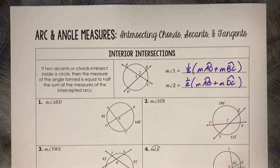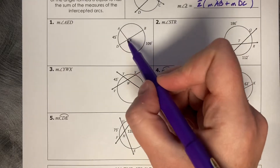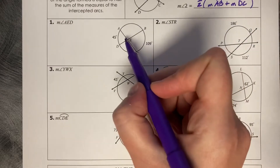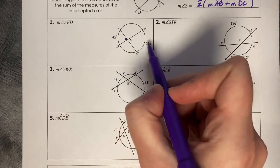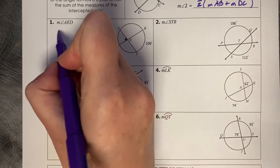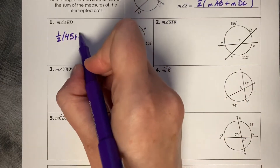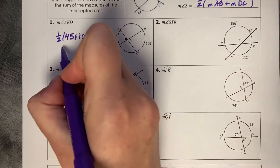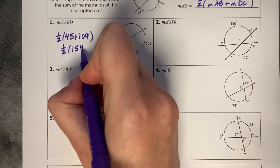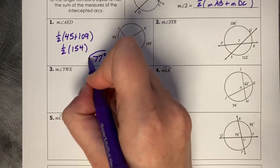So let's give it a try. What's the measure of angle AED? This angle is half the sum of its corresponding arcs, and we have both of them. So it's going to be one half of 45 plus 109, which is a half of 154, and a half of 154 is 77 degrees.